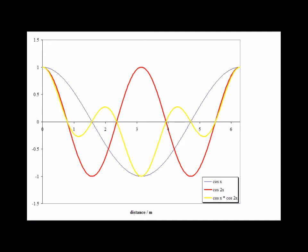Eigenfunctions of an operator with different eigenvalues are orthogonal. The function psi one, e to the i x, has the eigenvalue h-bar for momentum, and psi two, e to the 2ix, has the eigenvalue 2h-bar. This graph illustrates the real parts of those functions: the real part of psi one is in blue, the real part of e to the 2ix is in red, and the product psi two star times psi one is shown in yellow.